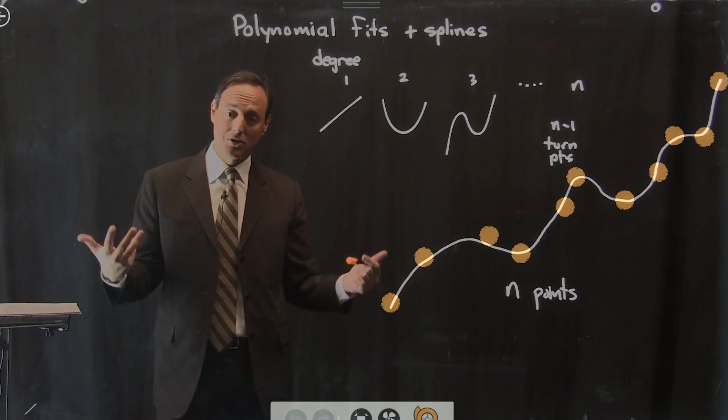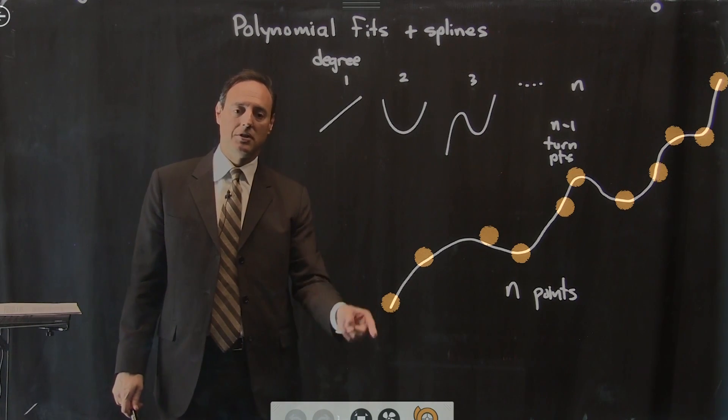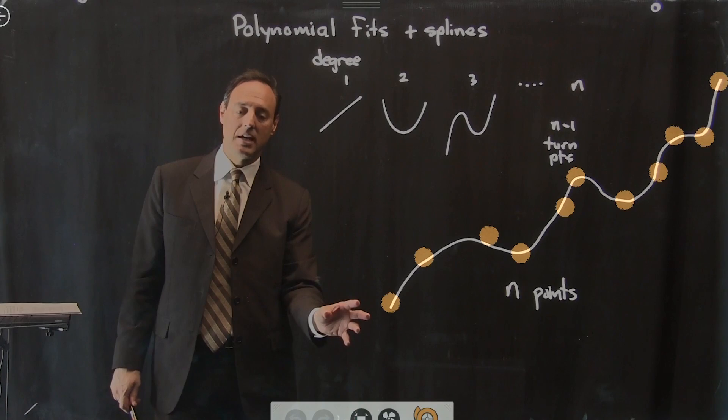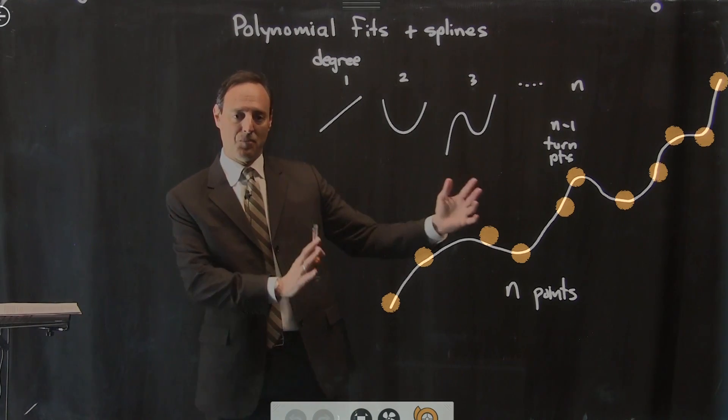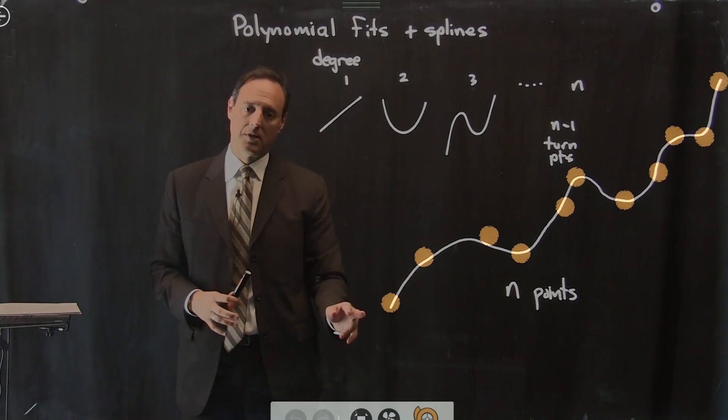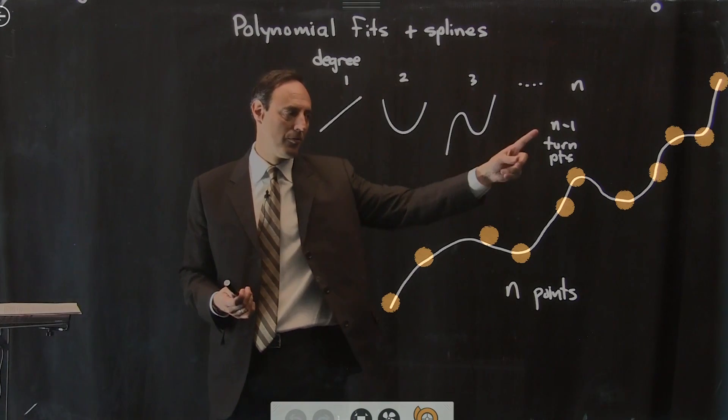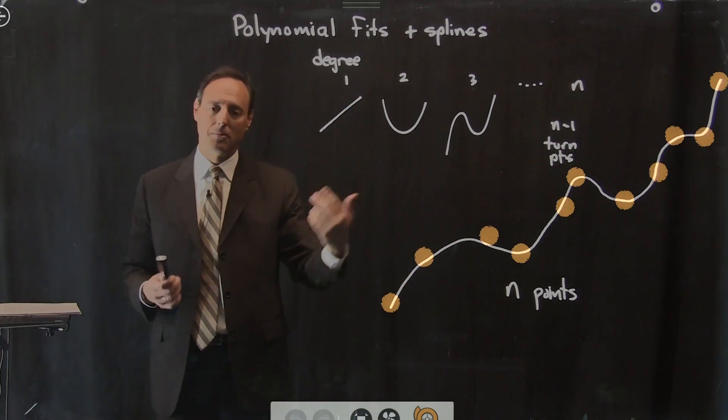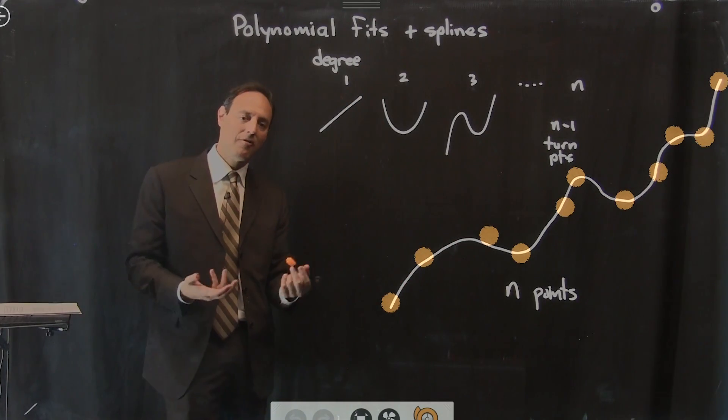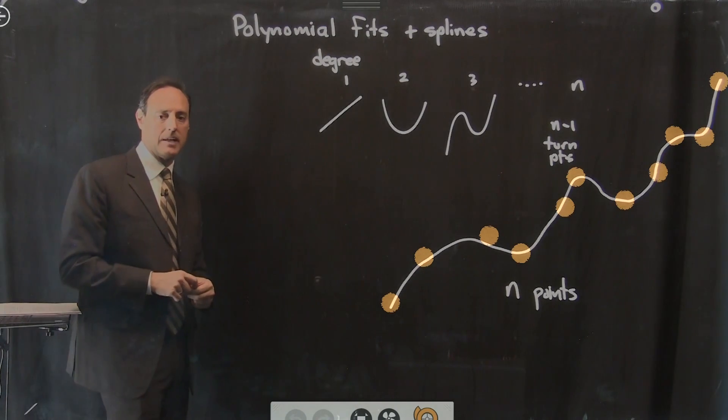You could also do extrapolation, which is what was the temperature down here somewhere? I don't have any data here. So it's extrapolating because it's not a point within the interval where I have data. That's a little harder than interpolation. But in any case, once I have a curve for this, I can start using my polynomial fit or my least square line fit to get values outside of the interval where I took data, okay?